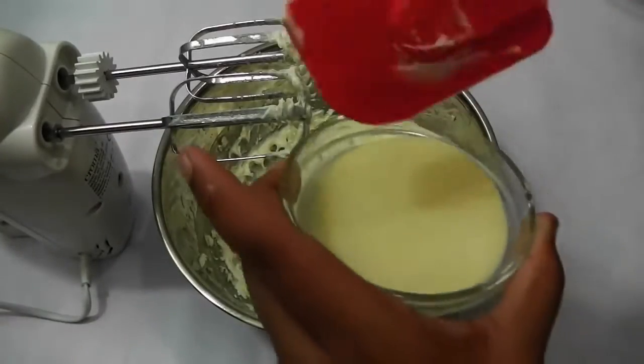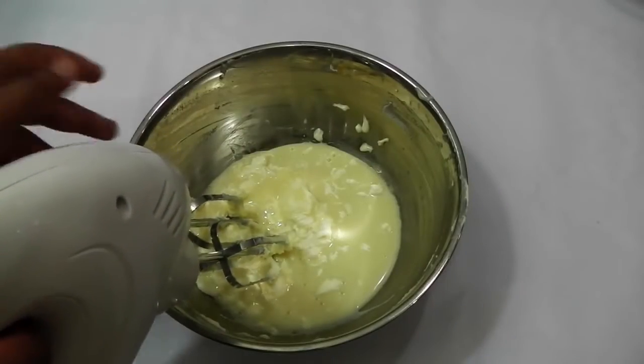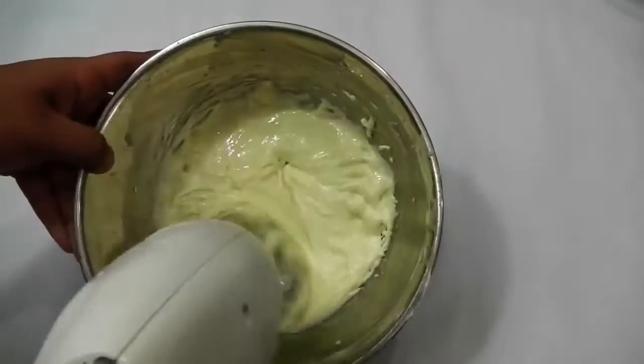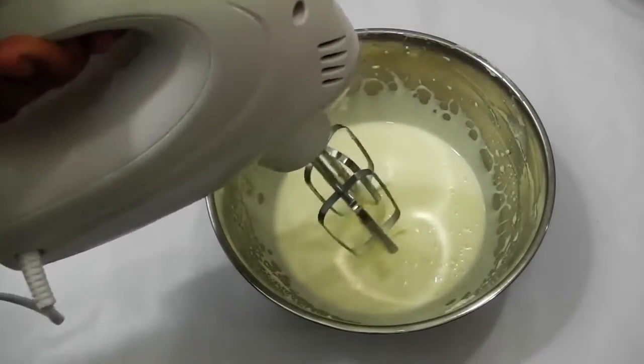This is creamed well. Now I'm going to add the condensed milk to it. Now let's whip this until it is light and fluffy. Have a look at this—this is so light, creamy, and nice.